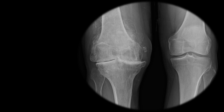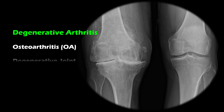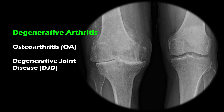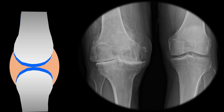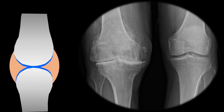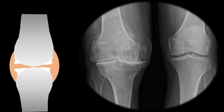Degenerative osteoarthritis, often simply referred to as osteoarthritis or degenerative joint disease, is the most common form of arthritis and typically affects older adults. This is a chronic joint condition characterized by the gradual breakdown and deterioration of the cartilage that cushions and protects the knee joint. This thinning and breaking down of the cartilage contributes to a loss of joint space.